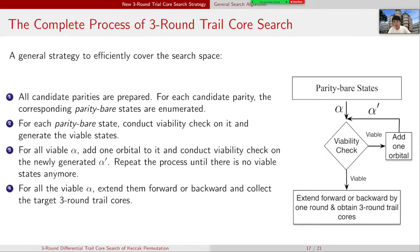Here is a complete process of three-round trail core search. Firstly, we need to prepare all candidate parities. For each candidate parity, the corresponding parity-bare states are enumerated. For each parity-bare state, we conduct viability check on it and generate the viable states. For all viable states α1, we add one more orbital to it and conduct the viability check on the newly generated α1. We repeat the whole process until there is no viable state anymore. For all viable states α1, we extend them forward or backward for one more round and collect the target three-round trail cores.